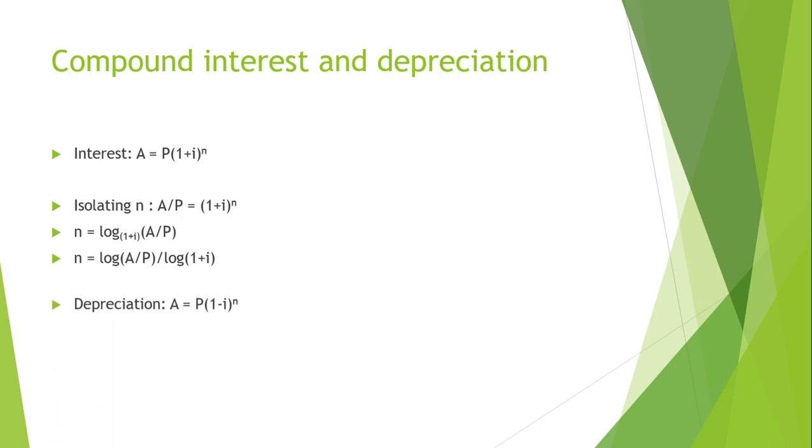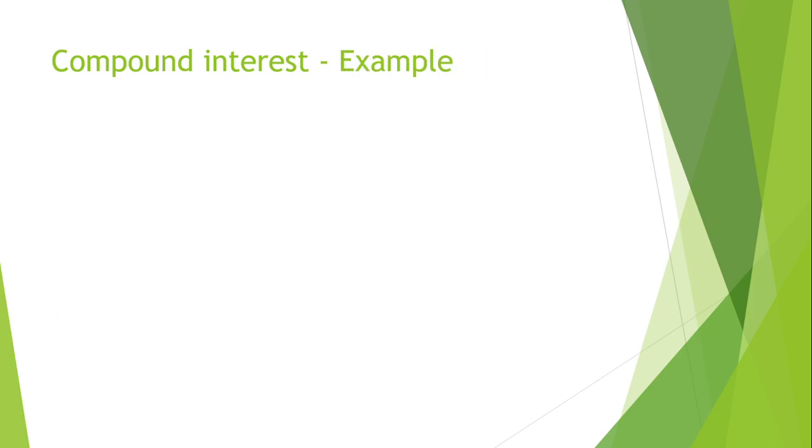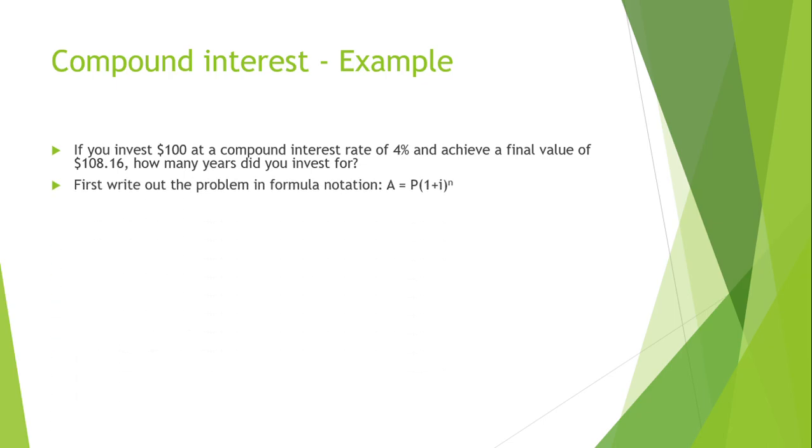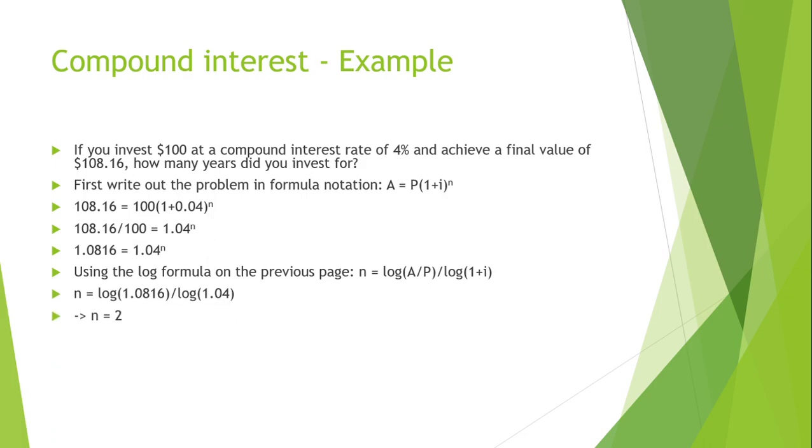Then, the formula for depreciation would be the same as the interest. Instead of having a plus, you'll have a minus. So, let's look at a compound interest example. If you invest $100 at a compound interest rate of 4% and achieve a final value of $108.16, how many years did you invest for? So, we still use the formula and then we plug in the relevant values and then we get to this value. And from that previous example, we just want to use that formula to solve N. Then we also just plug in the values and then you get N is 2 years. A depreciation example will follow the same logic. Just replace the 1 plus i in the log function with 1 minus i.